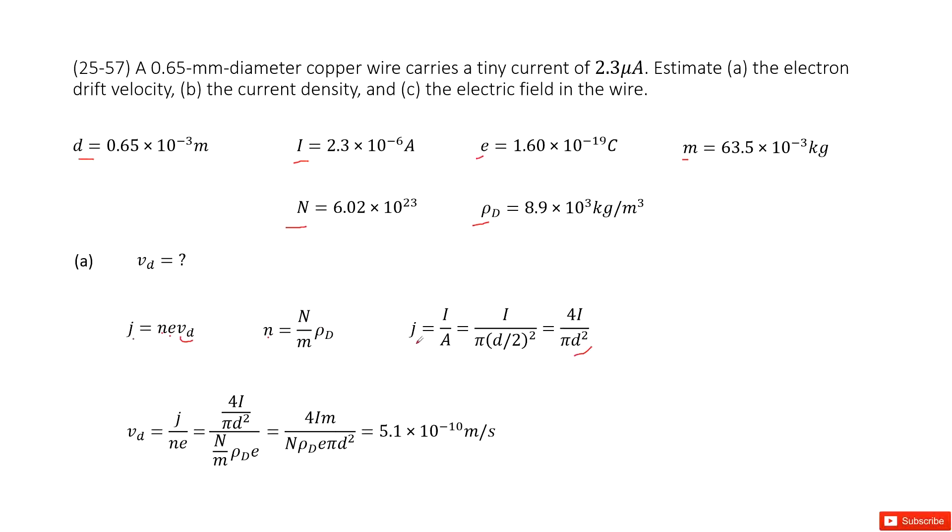Now you can see n is found, j is found, the current density. So you can input these two quantities in this term, in this function. So there we get the function as the drift velocity as the current density divided by n times e. Input these two terms inside, you can see, we organize it, simplify it, it becomes this term. And in this term, you can see all the quantities given. Input all the quantities, you get the answer there. See, it moves very slowly.